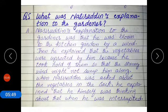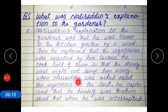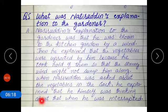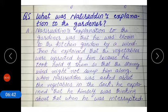Now coming to question number 5: What was Nasiruddin's explanation to the gardener? Nasiruddin's explanation was that he was blown to the kitchen garden by a wind — blown means urke aa jaana, kitchen garden means bagiche mein, by the wind means hawa ke zariye urke aaya. Then he explained that the vegetables were uprooted — uprooted means jad se nikalna — because he took hold of them so that the strong wind might not sweep him along.